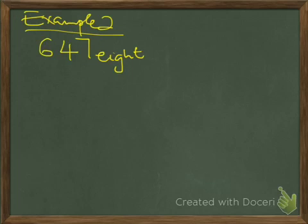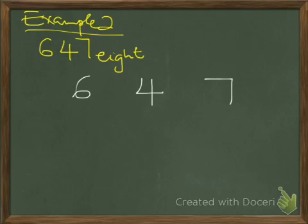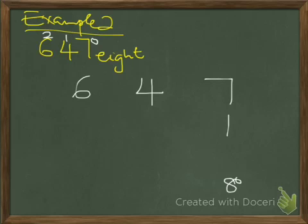Let's look at 647 in base 8. This position is 0, this is 1, this is 2. These are the values of the positions. 8 to the power 0 equals 1, which means 7 is a unit.